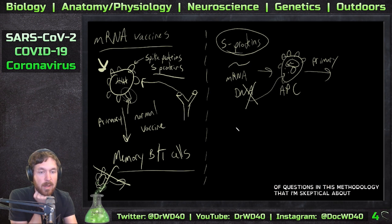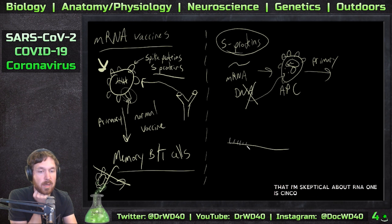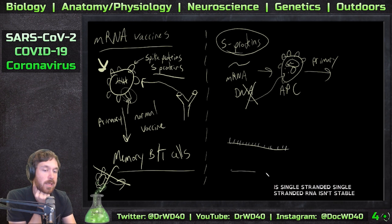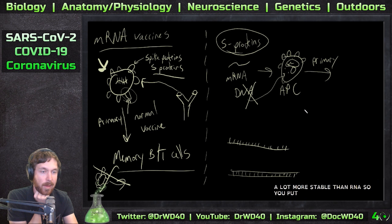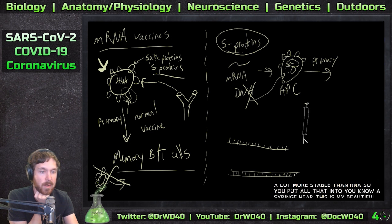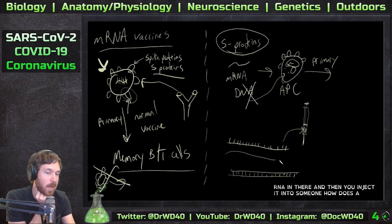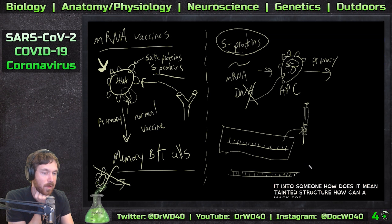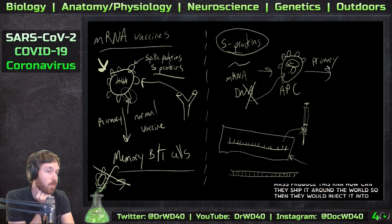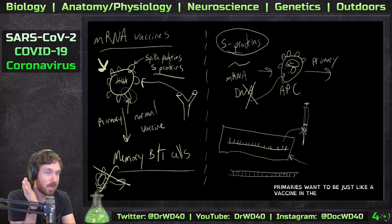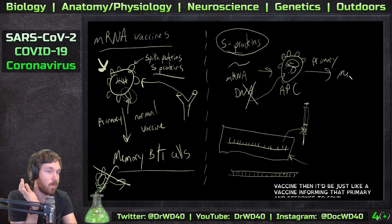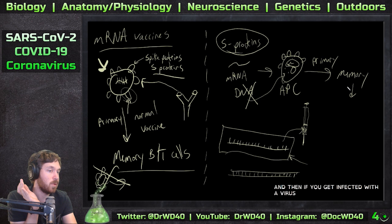There are a lot of questions about this methodology I'm skeptical about. RNA is single-stranded, and single-stranded RNA isn't stable — DNA is double-stranded, making it much more stable. You fill a syringe with the RNA, inject it into someone — how does it maintain its structure? How can they mass-produce this RNA and ship it around the world? Once injected, it would form a primary response just like a vaccine, forming the memory — and if you get infected with the virus, you wouldn't even realize it.